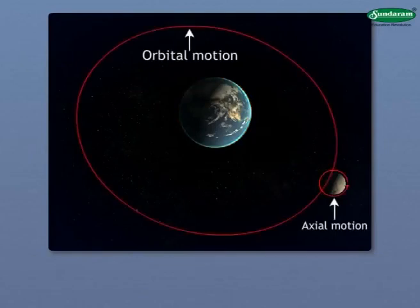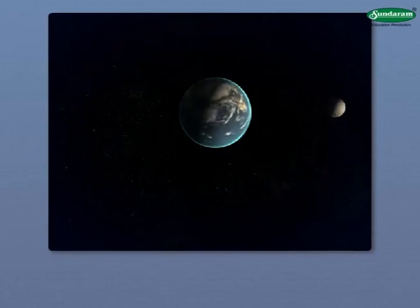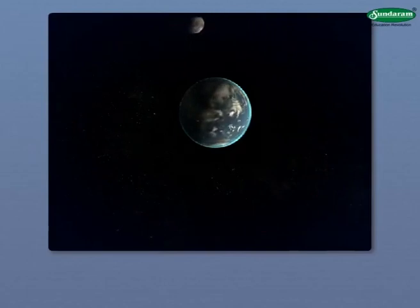As the axial and orbital motions of the Moon are the same, one side of the Moon always remains towards the Earth and hence, the other side never becomes visible from the Earth.